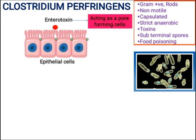These enterotoxins act as toxins in epithelial cells, forming pores. This pore formation is one key condition in Clostridium perfringens food poisoning.